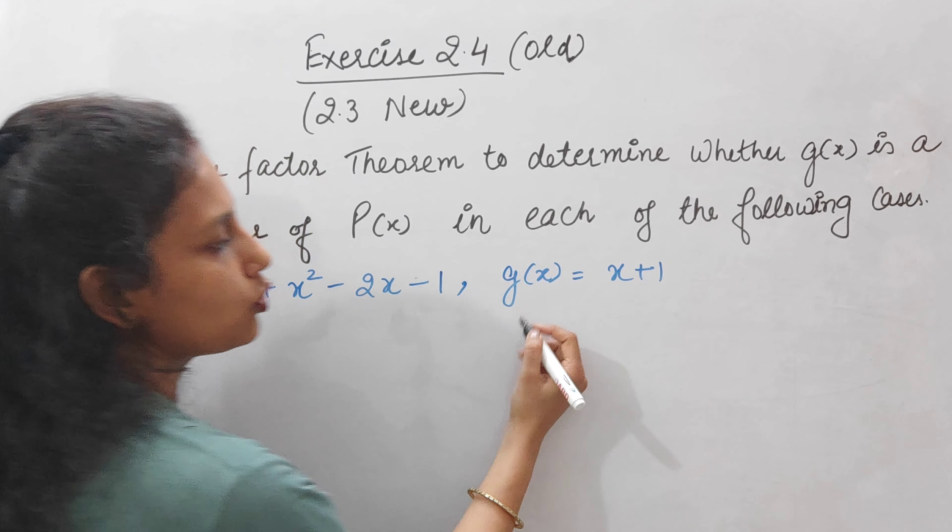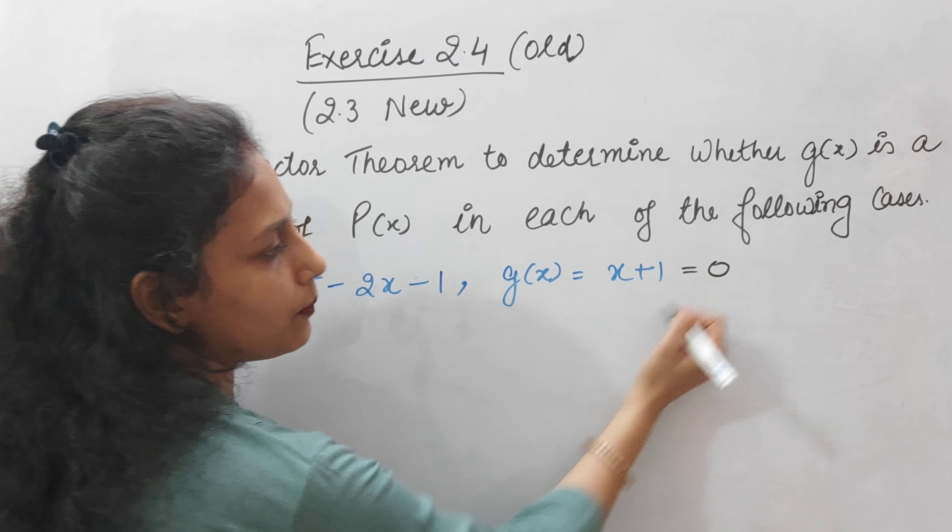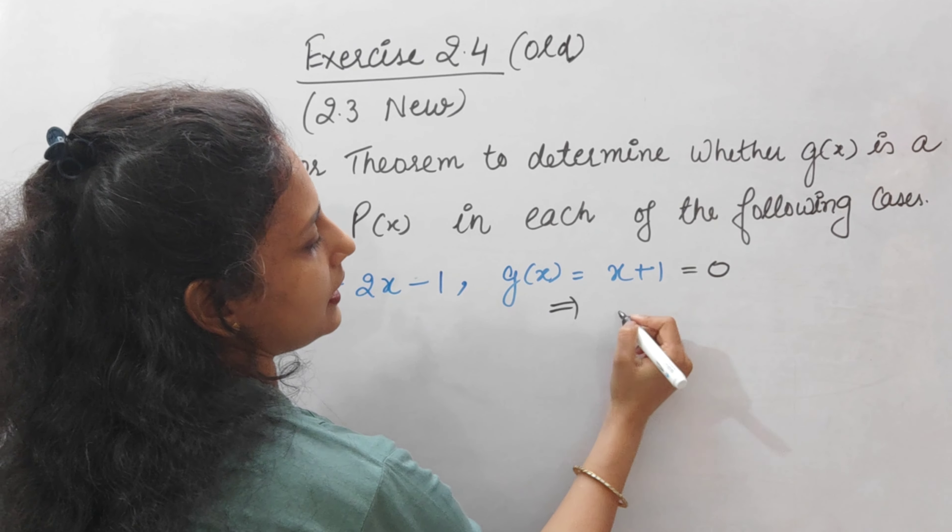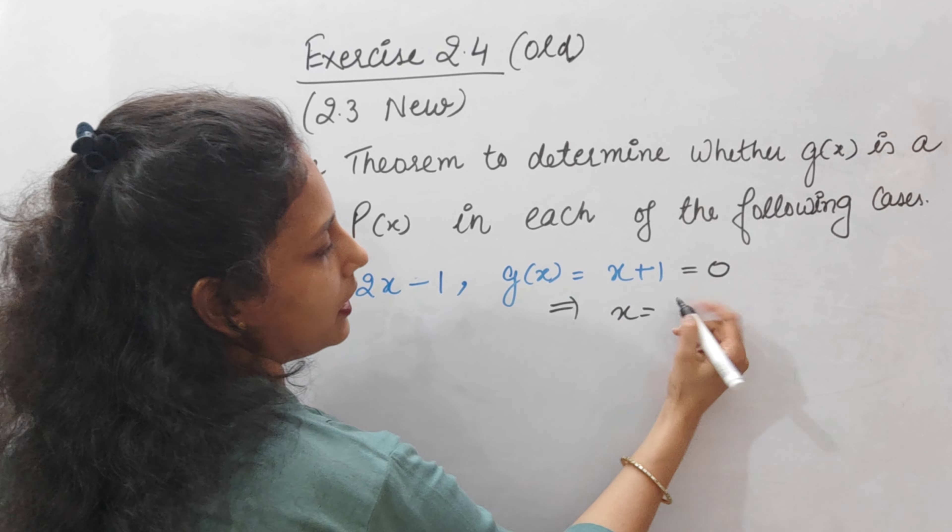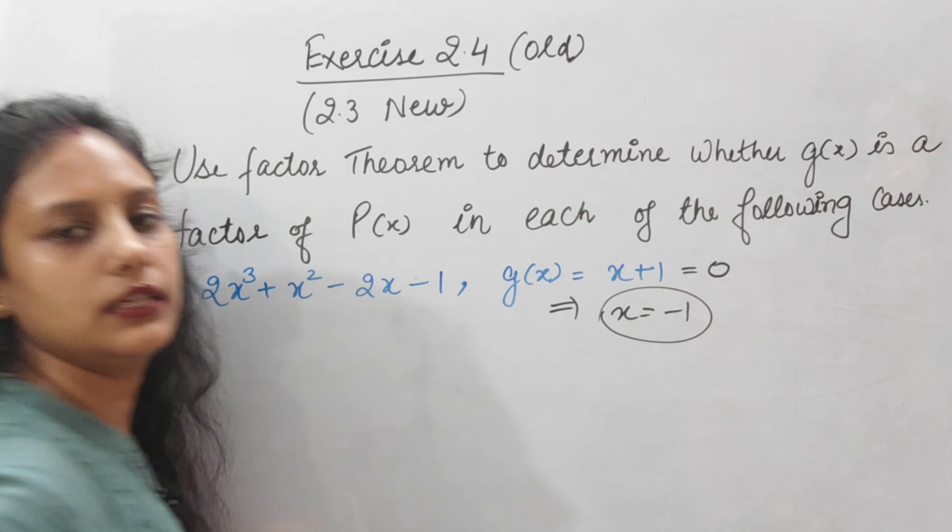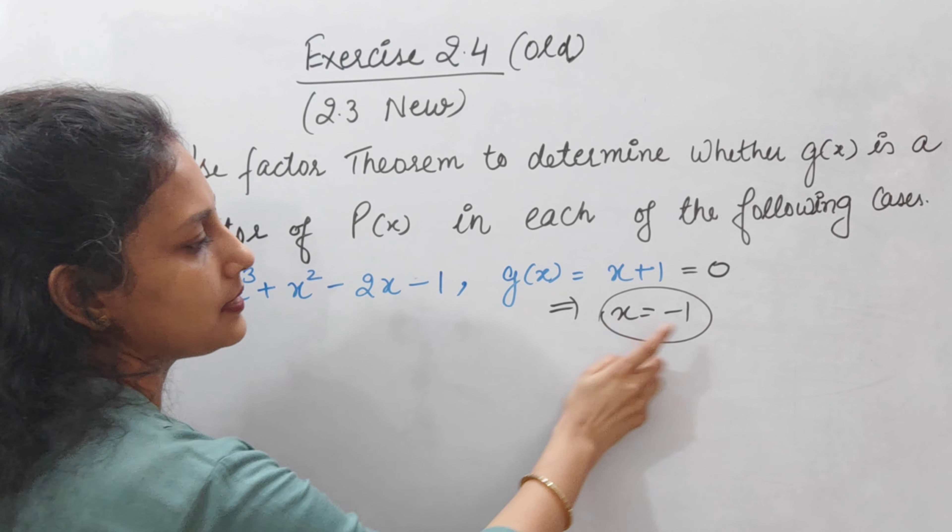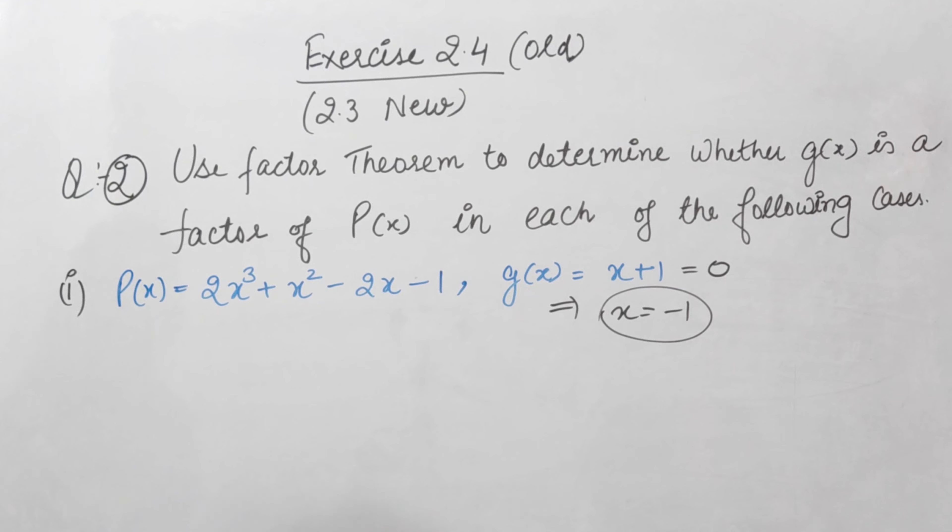So g(x) is what we have to do - this time x plus 1. So what do we have to do? g(x) will be equal to 0 and we will find out the value of x. Given polynomial P(x), we will replace x with minus 1 and we will check if the value equals 0. If so, our x plus 1, which is g(x), will be a polynomial factor. Otherwise, it will not.